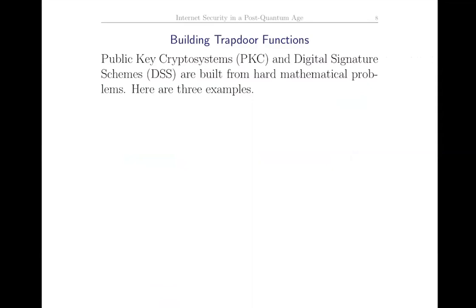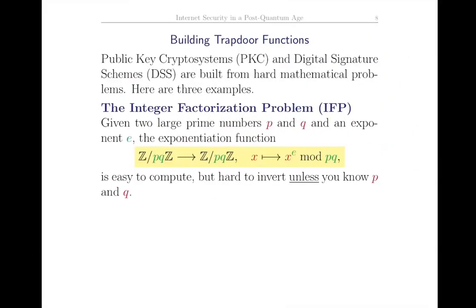Cryptography has a lot of abbreviations: PKC is public key cryptosystem, DSS is digital signature scheme. We want to build these from hard math problems. Here are three examples. There's the integer factorization problem: given two prime numbers, if I tell you their product PQ, it's hard to find P and Q. One common approach uses the powering function - you take a number and raise it to the e-th power where e and PQ are known. It's easy to compute this, but quite hard to invert unless you know P and Q.